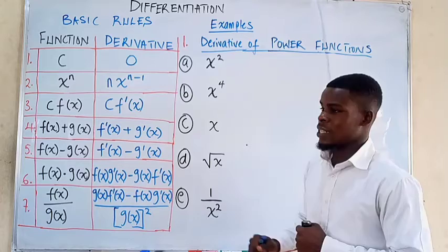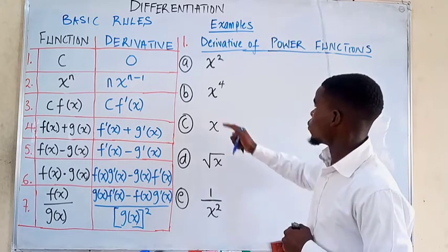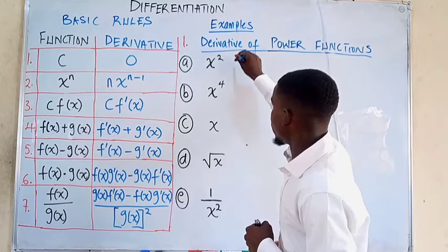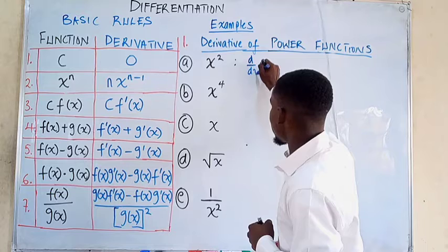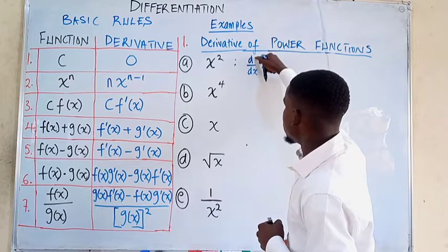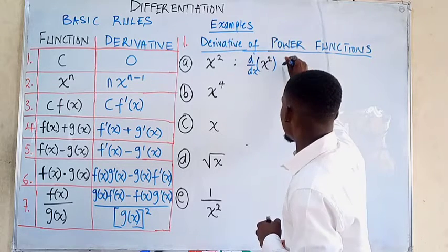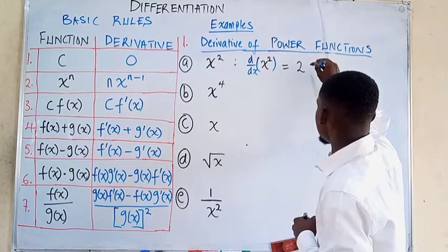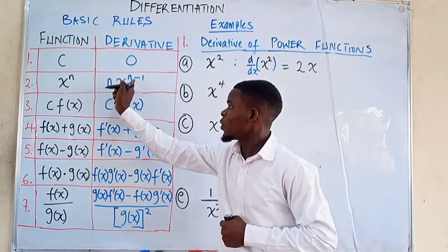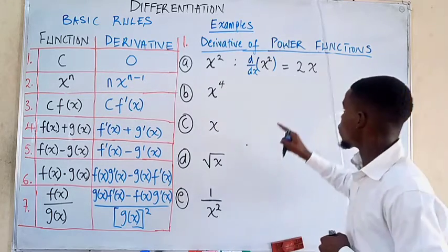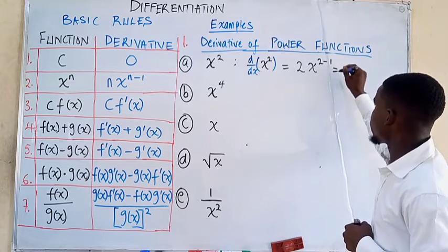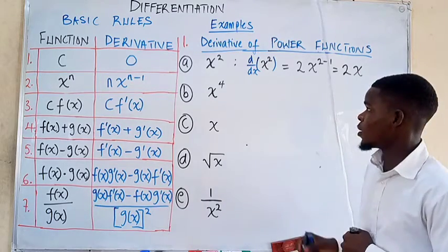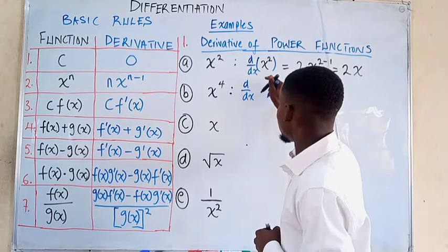We apply the power rule to these examples. The first function is x squared. To differentiate, we write d/dx of x squared. Using the power rule, we bring down the power 2, multiply with x, then subtract 1 from the power: 2 minus 1 gives us 1. So the derivative is 2x raised to the power 1, which is simply 2x.